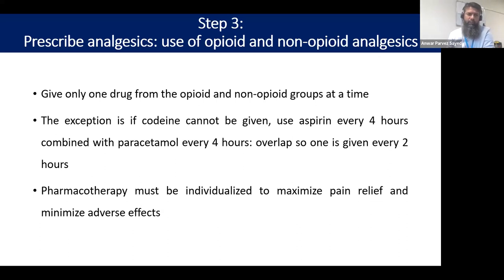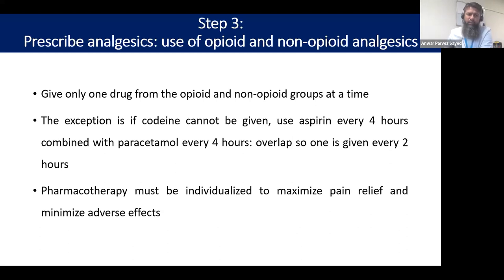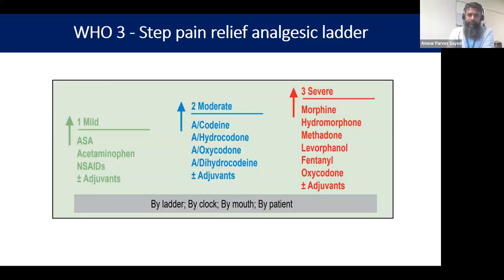You can give one drug from opioid and non-opioid groups — tramadol for example is an opioid analgesic that can be used, though it has its own side effects. Morphine is a WHO-approved opioid and should be used at the stage where it is required the most. Codeine can also be used with non-steroidal anti-inflammatories like aspirin but needs to be used alternately. WHO gives a three-step pain relief analgesic ladder: mild, moderate, and severe — and based on which stage the patient is in, we pick and choose.